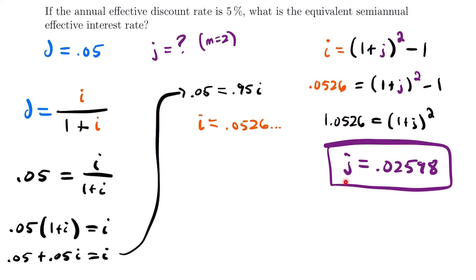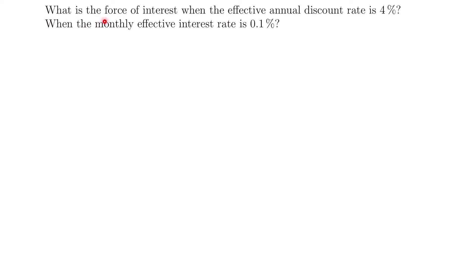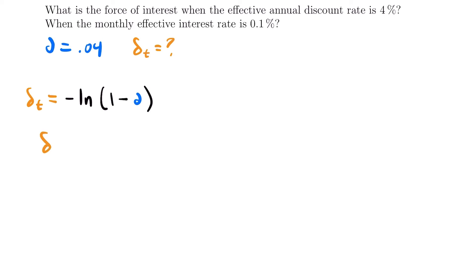Let's look at one more final example. What is the force of interest when the effective annual discount rate is 4%? We know D = 0.04, and we want to find the force of interest delta. We have a formula: delta equals the negative natural log of (1 minus D). So delta equals the negative natural log of (1 minus 0.04). Plugging this into the calculator, the force of interest delta equals 0.0408.